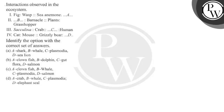Hello, children. Let's read the question. The question says: 'Interactions observed in the ecosystem.' In the question, we have some interactions given here. You can see 1st, 2nd, 3rd and 4th. And what do we need to do? Identify the correct set of answers given here. For which A, B, C and D, we have to choose the correct answer. So now, let's start the question.